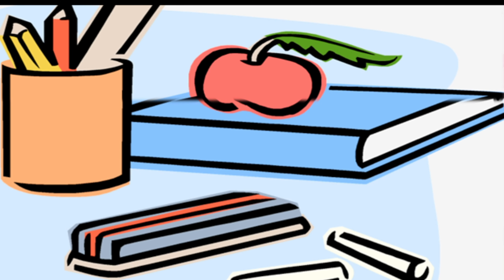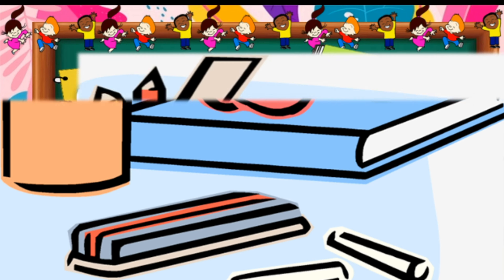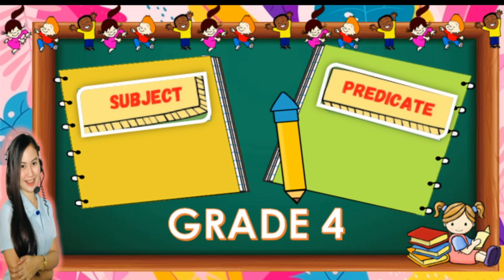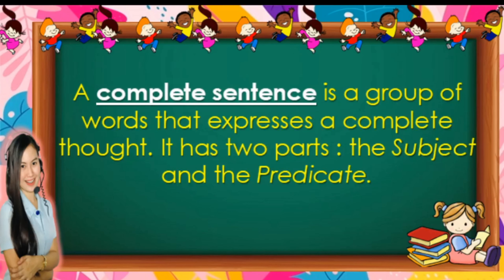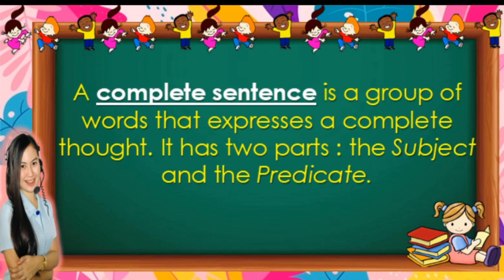In this video, we're going to learn about subject and predicate. Do you have any idea what a complete sentence means? A complete sentence is a group of words that expresses a complete thought. It has two parts: the subject and the predicate. Complete sentences are made up of these two important parts, and we use complete sentences every day when we read, when we speak, and when we write.